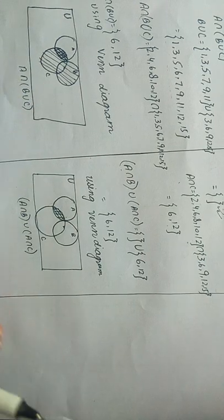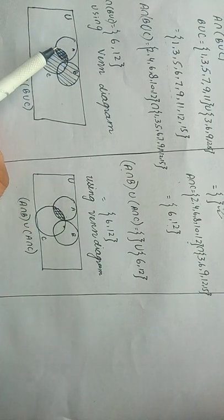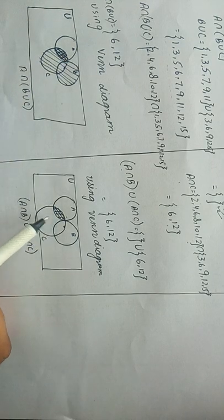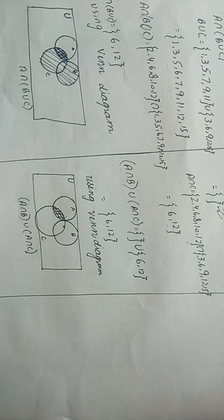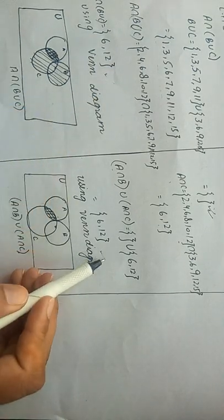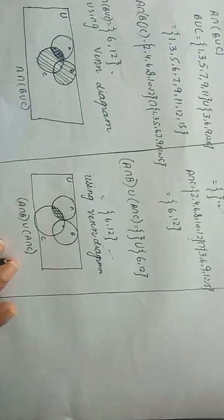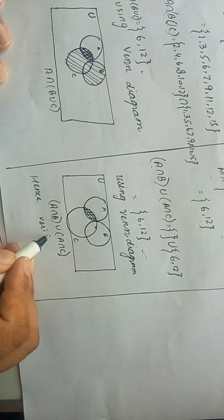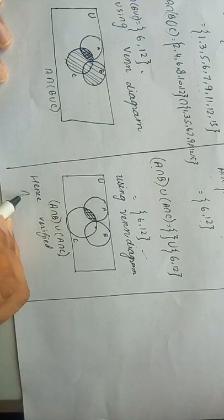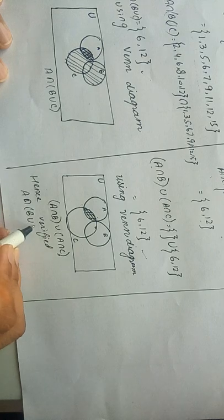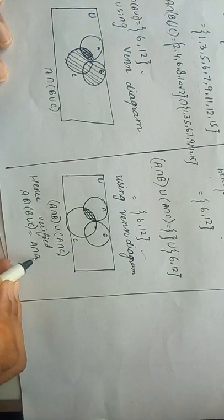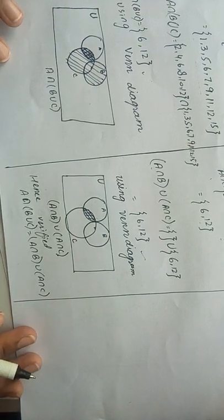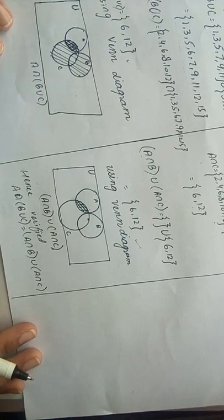If you look at the Venn diagram, this portion represents A ∩ (B ∪ C) and this portion represents (A ∩ B) ∪ (A ∩ C). Both are having the same Venn diagram and the same answer. So here we verified that A ∩ (B ∪ C) = (A ∩ B) ∪ (A ∩ C), that is the distributive law of intersection over union of sets.